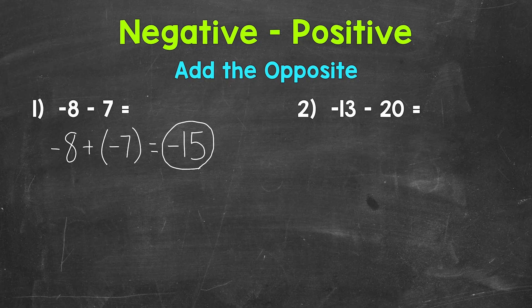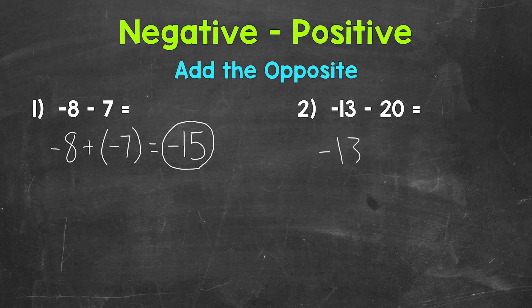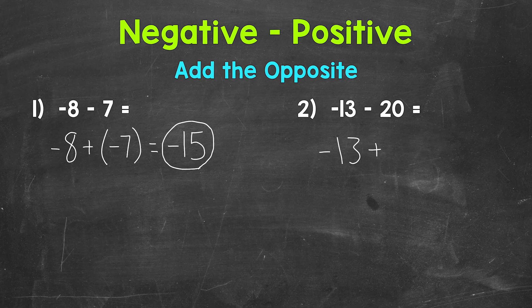Let's rewrite that problem, adding the opposite. So we start with negative 13, and then add the opposite of positive 20. The opposite of positive 20 is negative 20. So we end up with negative 13 plus negative 20.